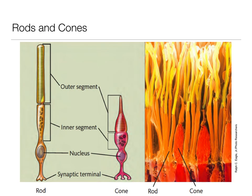Rods and cones are named for their shape. Rods have a rod-like shape on their outer segment, whereas cones have more of a cone shape. Both are neurons — they have a nucleus and synaptic terminals to convey neural information to subsequent cells. The outer segment does the transduction. In an actual microscope image, rods appear more yellow and are the taller ones, while cones are the shorter red ones.